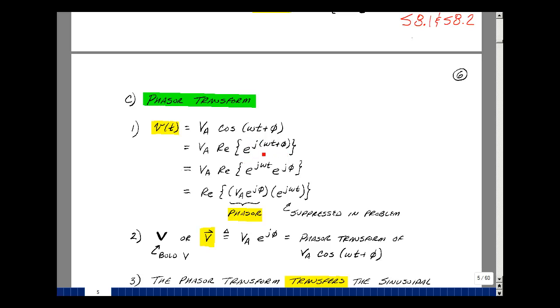I could multiply this out and you get e to the j omega t and then e to the j phi. So when you multiply these two, you're going to add their arguments. We can bring the term V sub a inside. It's just a scalar. I want to bring it over here by the second term.